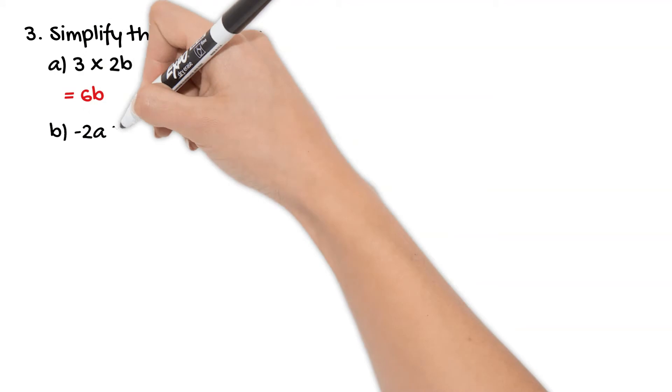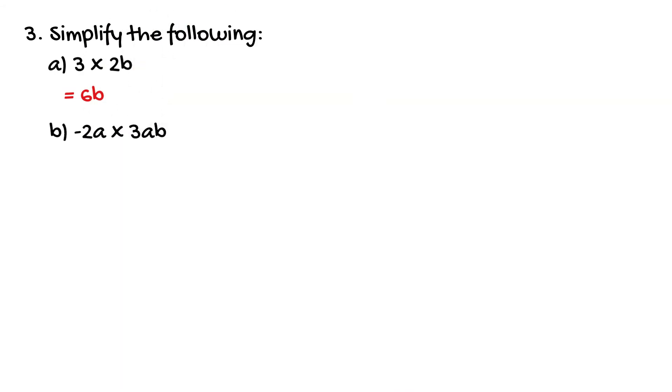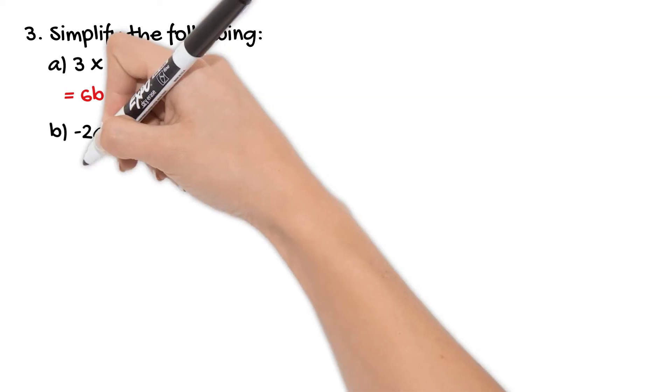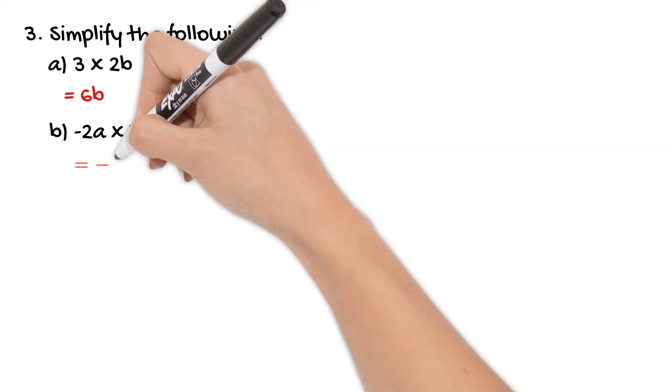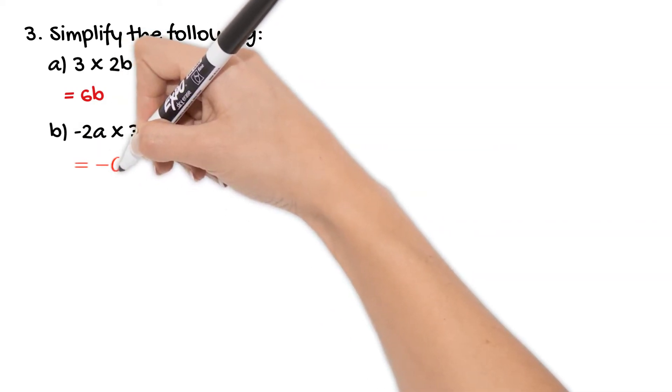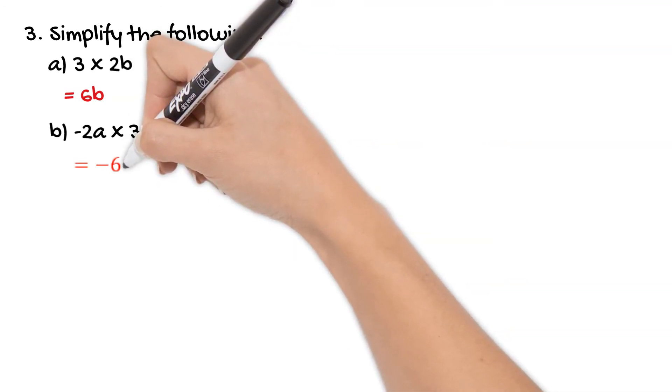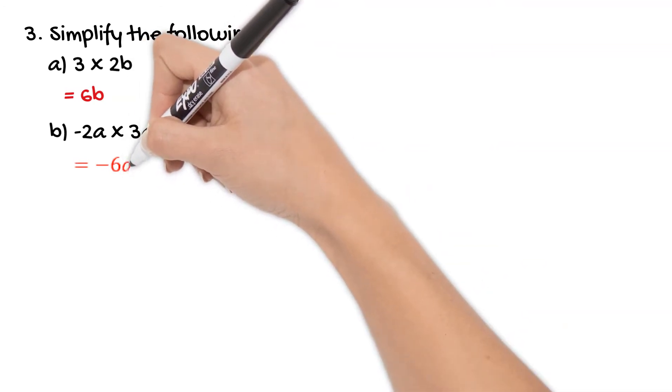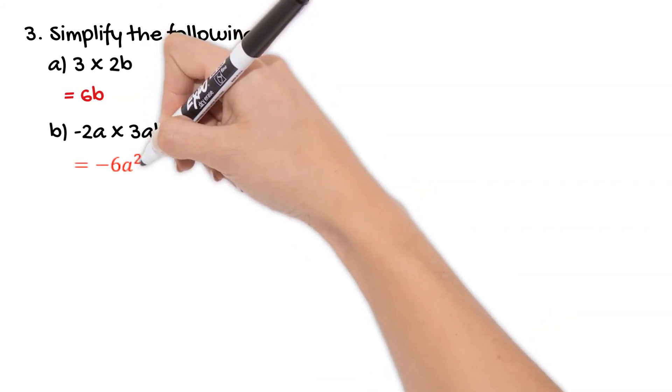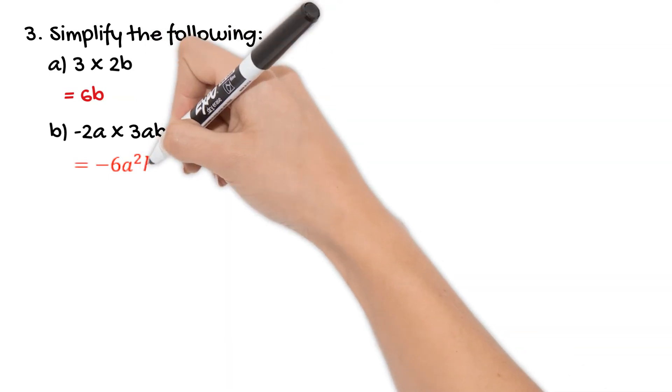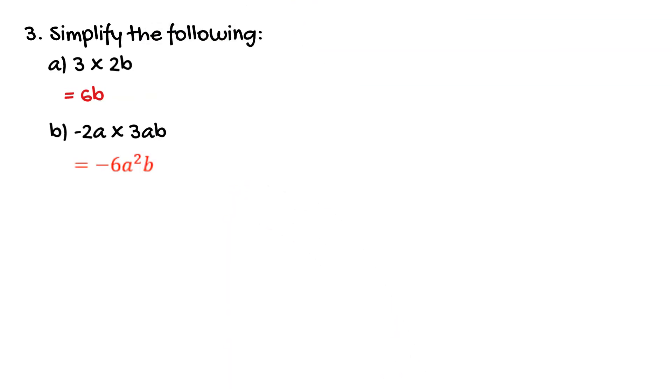And then our second expression negative 2a times 3ab. Now this is where we need to make sure that we have an understanding of what it means to multiply something by itself. We have negative 2 times 3 which of course is negative 6. So we deal with the numbers first. I want you to deal with the numbers and the pronumerals separately. Then you've got a times ab. So a times a, anything multiplied by itself is squared. So a times a gives us a squared and b is not multiplied by anything that's going to change it. So our final answer ends up being negative 6a squared b.